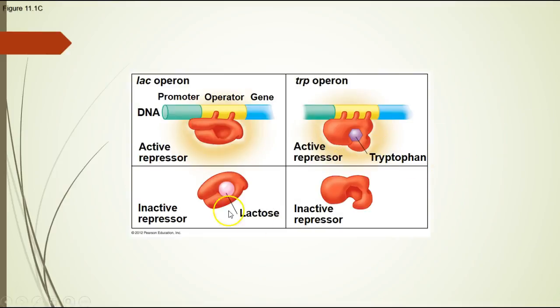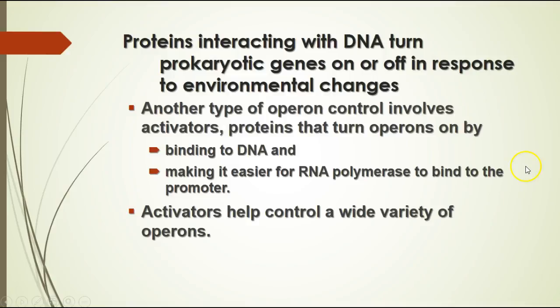This shows how it works with active and inactive repressors. In the lac operon, the active repressor attaches to the operator in the absence of lactose, but lactose inactivates it. In the trp operon, the operon is active when tryptophan is present but inactive when tryptophan is absent, allowing synthesis of tryptophan. Another type of operon involves activator proteins that turn on the operators by binding to DNA and making it easier for RNA polymerase to bind to the promoter.